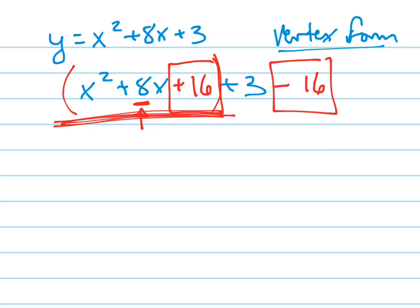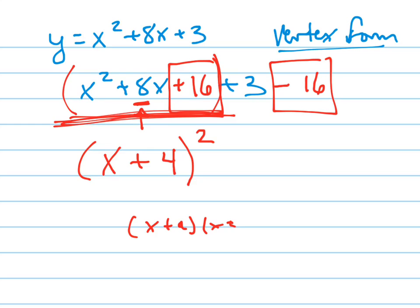Now this right here factors. How does it factor? X plus 4 — and what was 4? It was half of 8, squared. That's how that factors. Foil it out and you'll see: x plus 4 times x plus 4, add like terms, do the foil thing, and you're going to get that original problem.